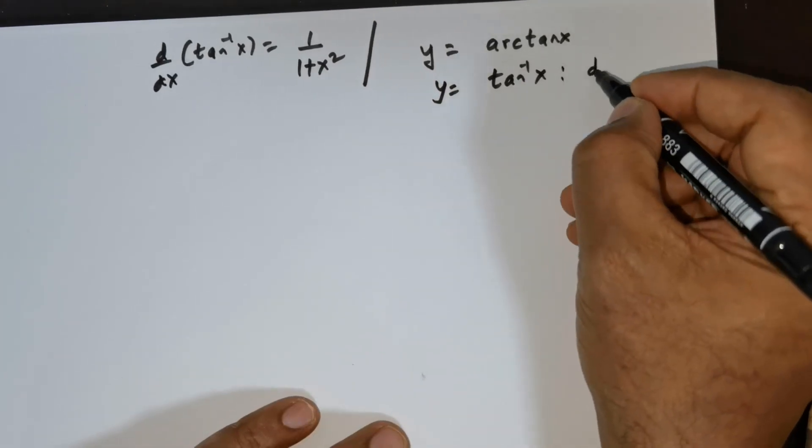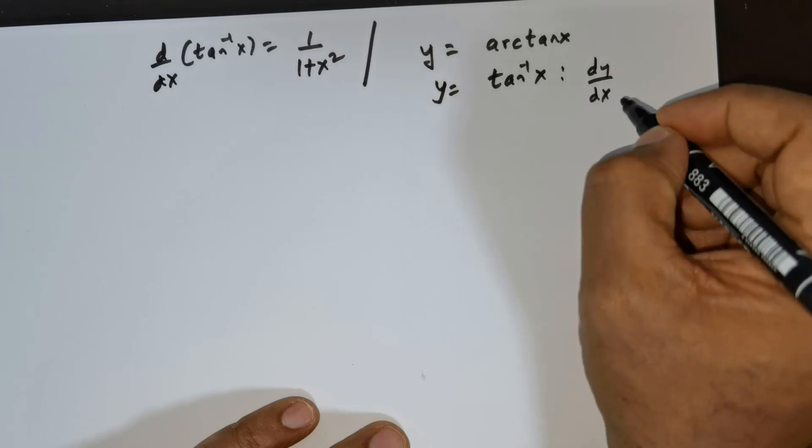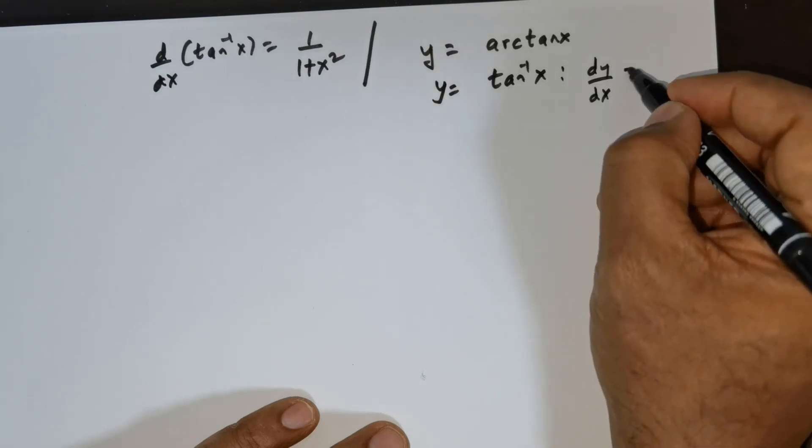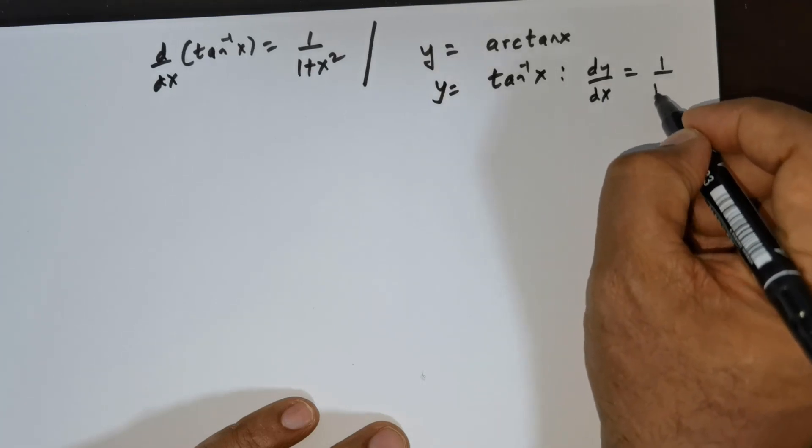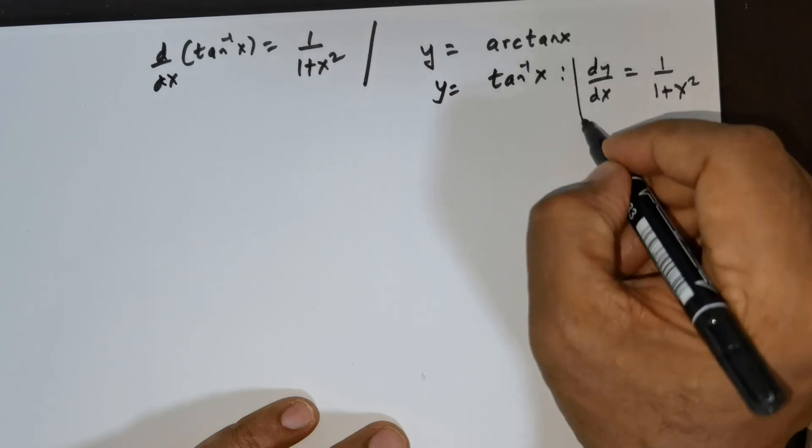We are asked to find dy/dx. Now the claim is dy/dx is equal to 1 over 1 plus x squared. That is the claim.